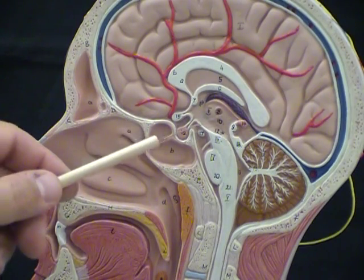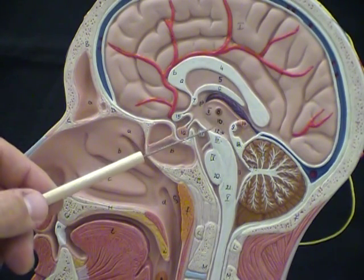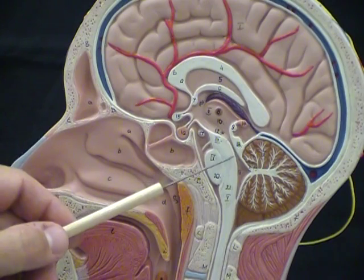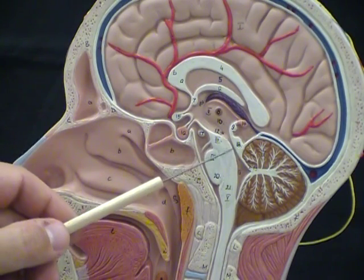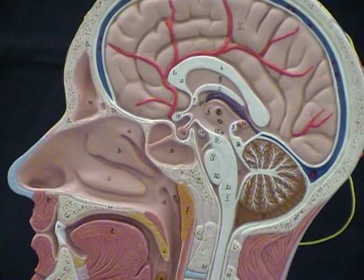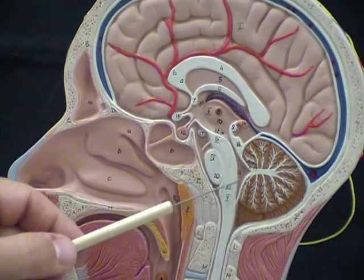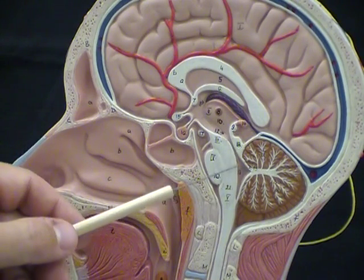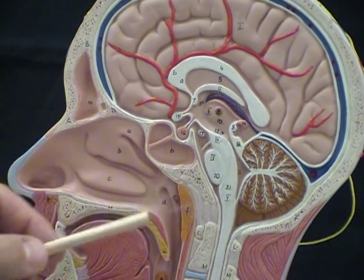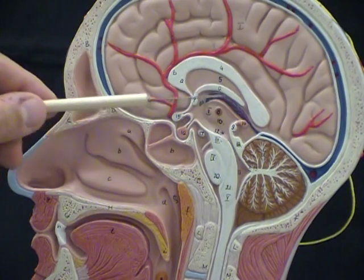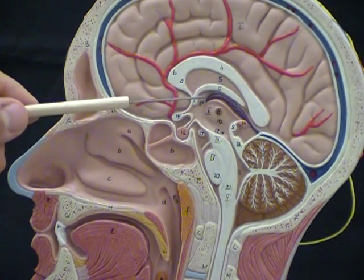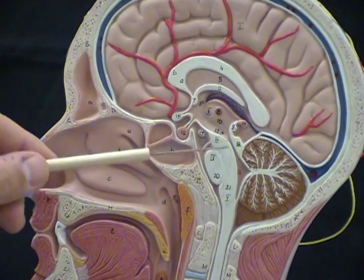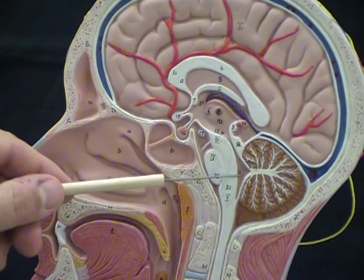Below the third ventricle with its choroid plexus, fluid's going to drain down this little canal here, which is called the aqueduct of silvius, otherwise known as the cerebral aqueduct. And it's going to drain cerebrospinal fluid into this other space, which is called the fourth ventricle. So our second three is third ventricle with choroid plexus, cerebral aqueduct, and fourth ventricle.